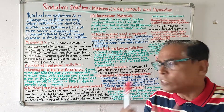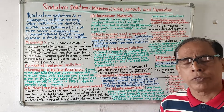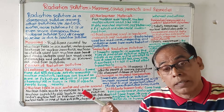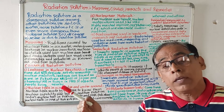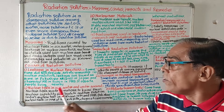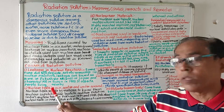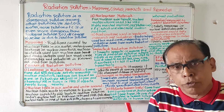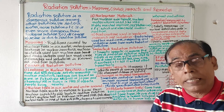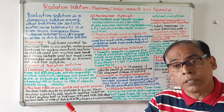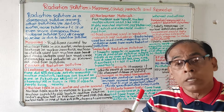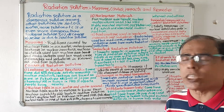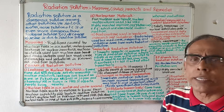So the first cause of radiation pollution is nuclear leakages in nuclear reactors. By this, living people nearby are affected. Whenever there will be leakages in nuclear reactors, radiations are found and living objects nearby are affected.